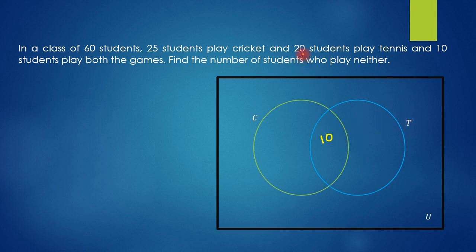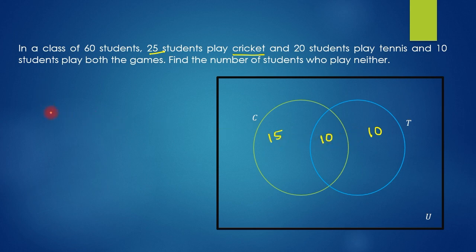20 students play tennis. Using the inclusion-exclusion principle, the number of students who play cricket or tennis or both — that is n(C∪T) — comes out to 35. So 35 students play either cricket or tennis or both.